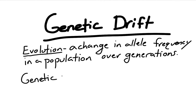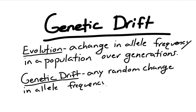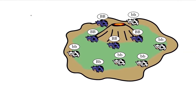So what is genetic drift? Genetic drift is any random change in allele frequency over generations. Genetic drift is different from other forms of evolution such as natural selection because we can't predict the change that's going to happen, unlike natural selection where you can predict which alleles are most likely going to increase in frequency in the population.